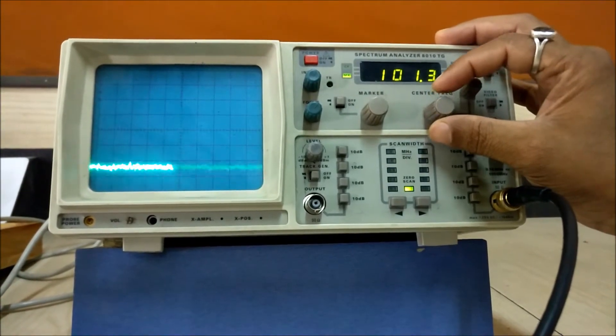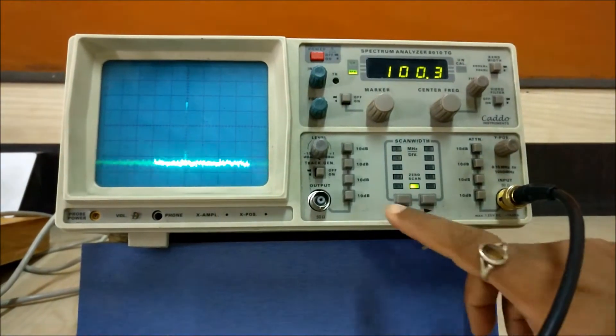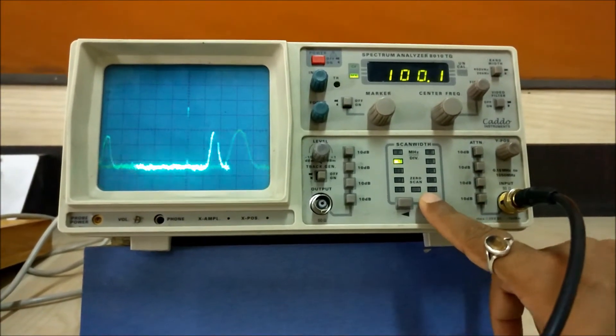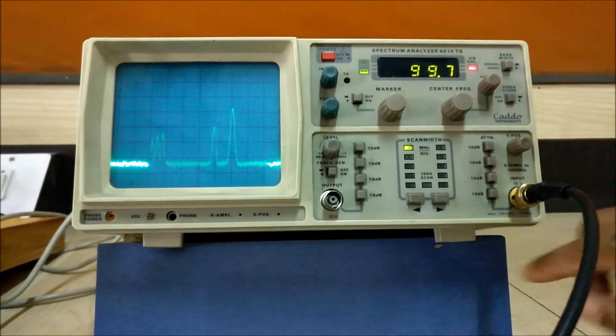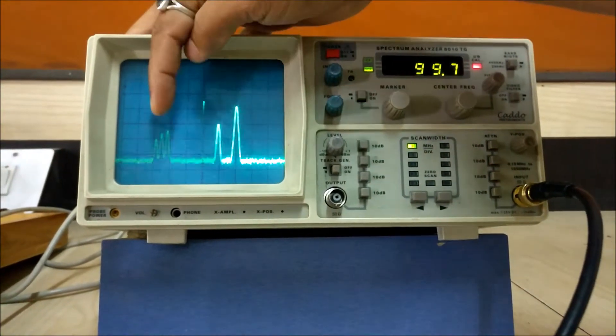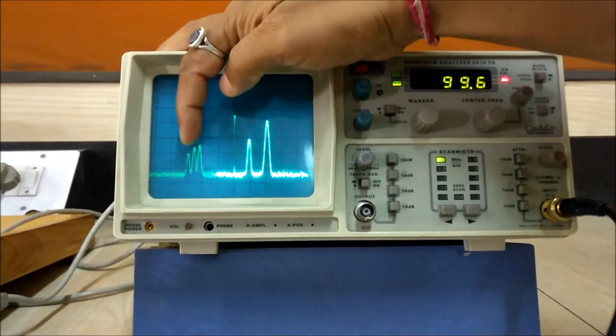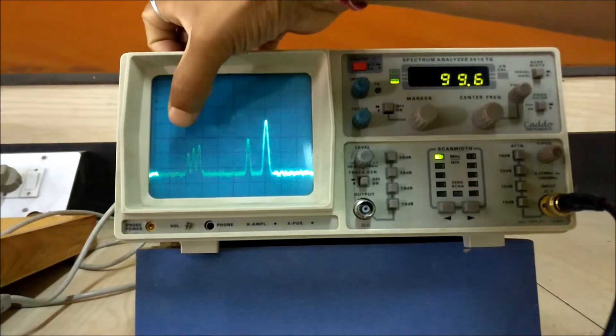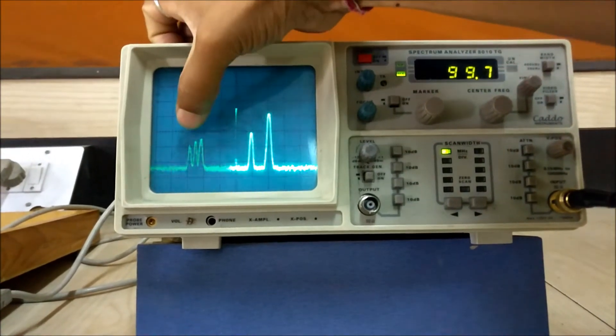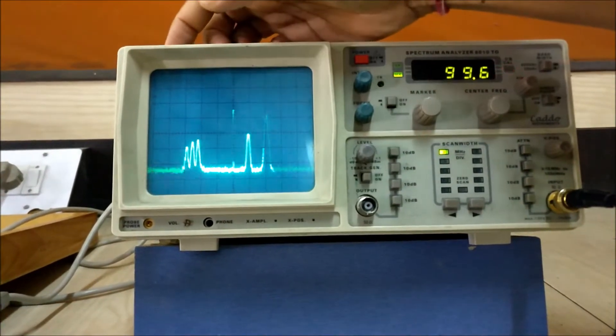100 megahertz. Now to check whether signal is coming or not we can just increase the scan width, suppose 2 megahertz per division. So we can see here the signals are coming. The five signal amplitudes basically represent the number of channels available. We can see here five channels are coming: first, second, third, fourth, and fifth. It means that here five FM channels are present in Jodhpur.